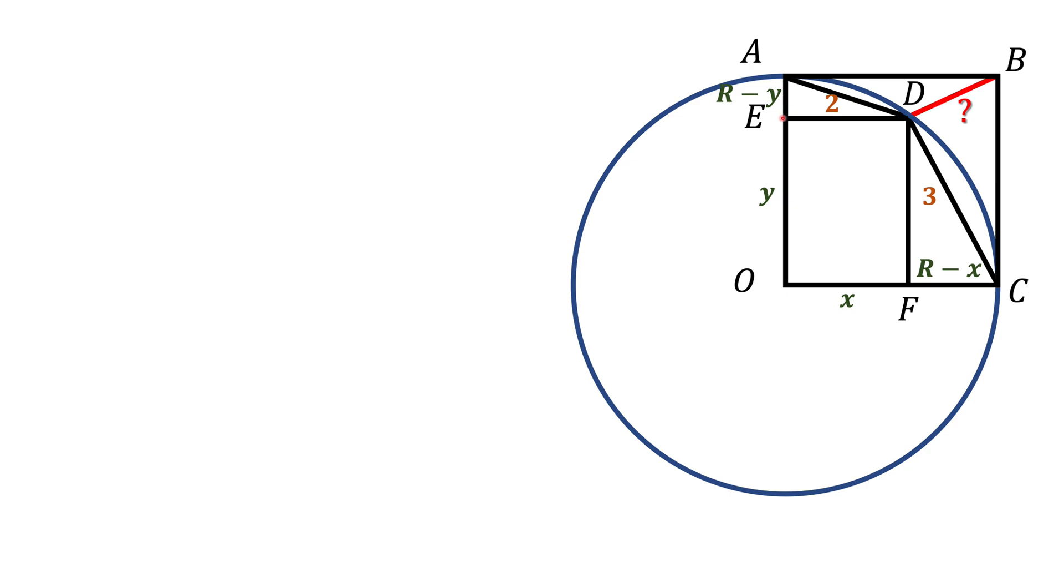And now what we can do, we can extend this side ED until it hits BC. We get this segment DG, which is going to be also R minus X. The segment BG is R minus Y.